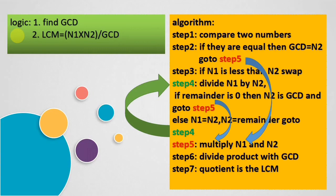Here is the algorithm. In step 1, we compare the two numbers. If they are equal, then GCD is any of those two numbers — here I will take N2 as the GCD — and directly go to step 5. In step 5, we are just multiplying the two numbers and dividing with the GCD, and that will give you the LCM.